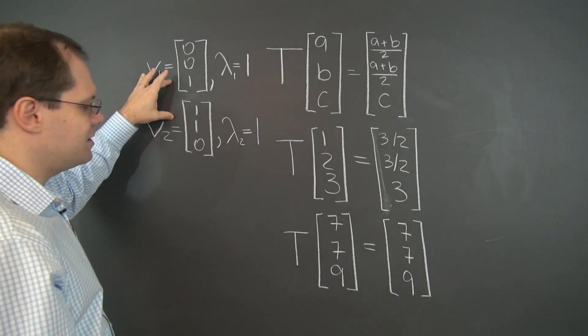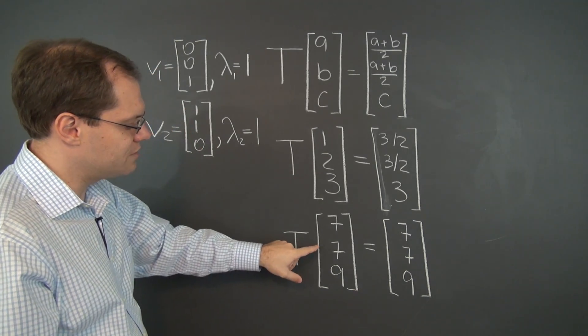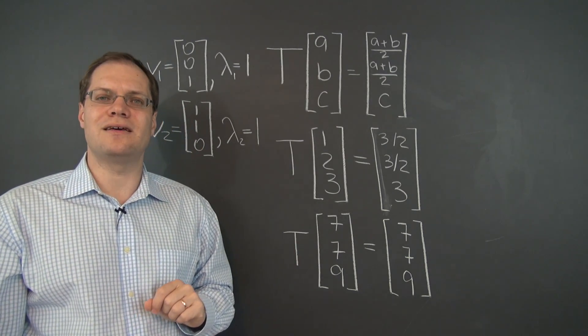In other words, it's any linear combination of these two eigenvectors, including this one. That one's in there.